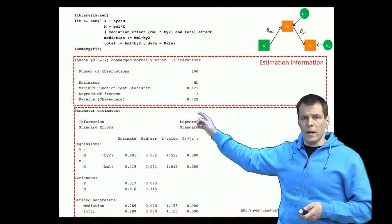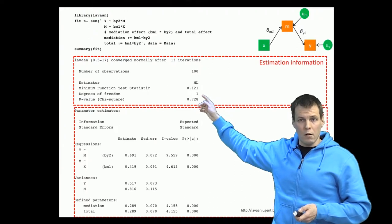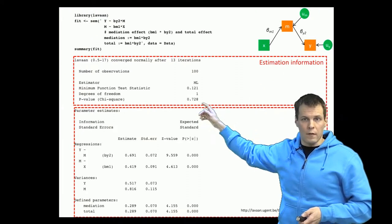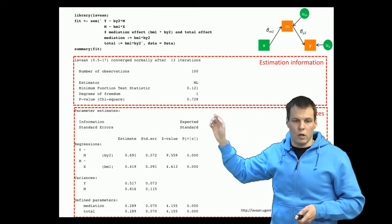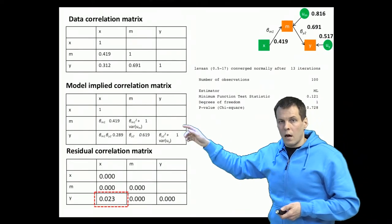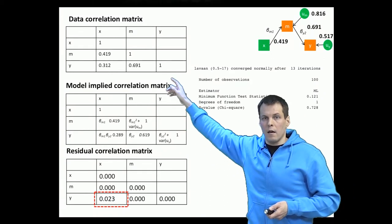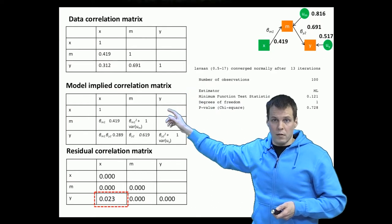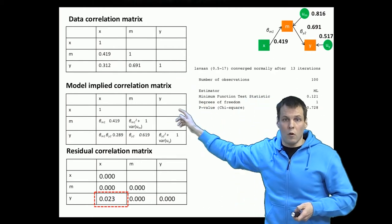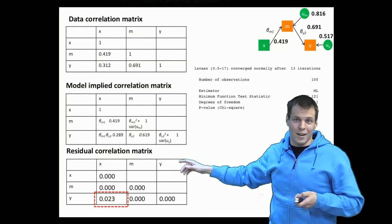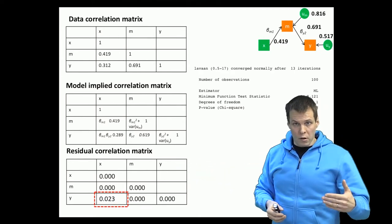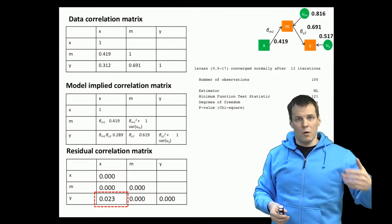Looking at the estimation information for the full mediation model: we have one degree of freedom and a non-significant p-value. The idea of the p-value is that it quantifies how different the actual observed correlation matrix is from the implied correlation matrix. The difference between the observed and model-implied correlation matrix is called the residual correlation matrix — analogous to residuals in regression, where the residual is the difference between actual and predicted observations.